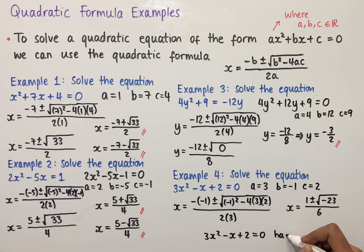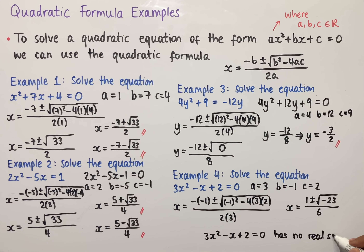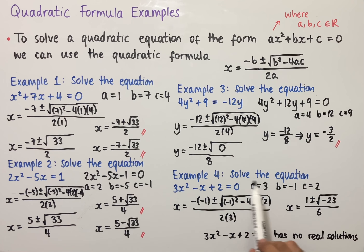Inside the square root we have a negative number, which means that root minus 23 is not a real number. So in this case, this quadratic does not have any real solutions, and we can say that 3x² - x + 2 = 0 has no real solutions. This is always the case whenever the number within the square root is negative when using the quadratic formula.